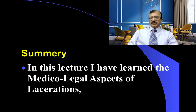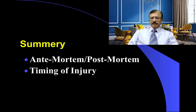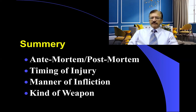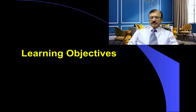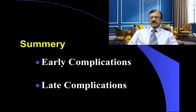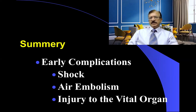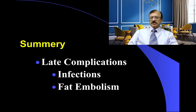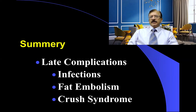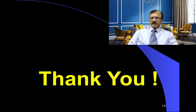Summary of this lecture: we have learned the medico-legal aspects of laceration — that is, the ante-mortem and post-mortem nature of the injury, timing of the injury, manner of infliction, kind of weapon, and the complications. The complications are either early complications or late complications. Early complications are shock, air embolism, and injury to vital organs. In late complications there are infections, fat embolism, and crush syndrome. Thank you very much. This is all about the laceration — this was the last lecture. Next lecture we will be discussing other mechanical injuries.